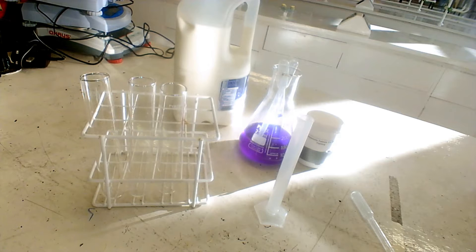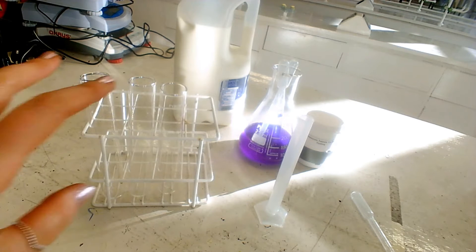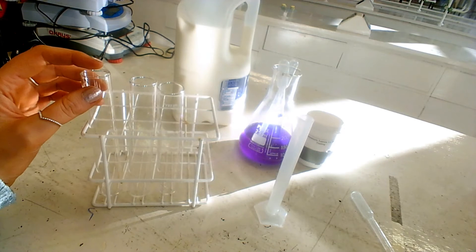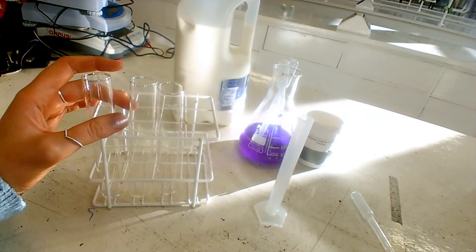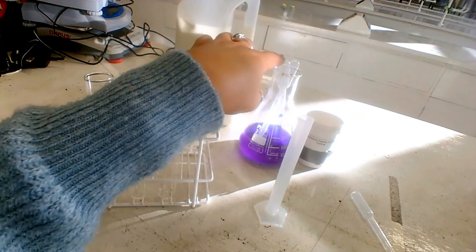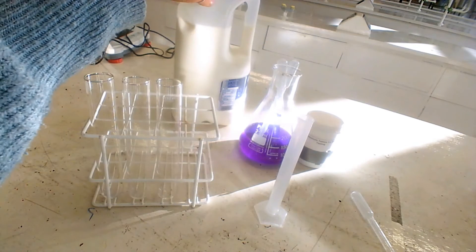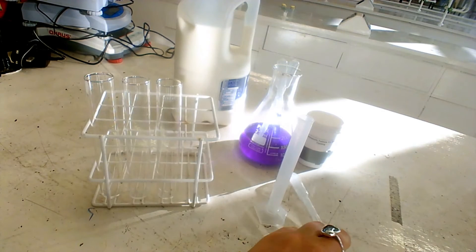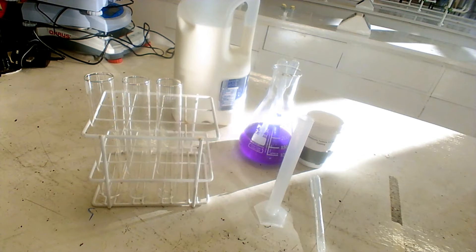Today we're going to look at the Resazurin test for milk quality to determine how much bacteria is present in milk. What you need to carry out this investigation is three sterile test tubes. Make sure they're clean as you don't want any bacteria contaminating your results - that could be a possible systematic error. You're going to need your Resazurin, a sample of milk, and then some extras that I'm using would be a dropper and a graduated cylinder.